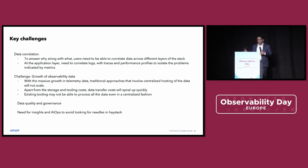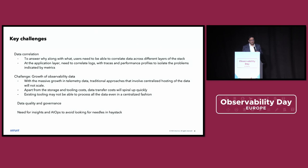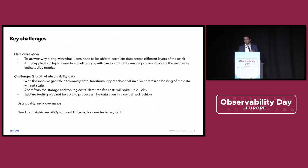Some of the challenges: correlation — I need to make sure data is correlated across different layers of the stack and different types of data, whether it's metrics, traces, or logs. The other challenge is we are looking at significant exponential growth of observability data, and I cannot simply move everything to one central place because it's not efficient — there's latency and huge network and egress costs. We also need data quality, governance, and AI ops accompanying it to turn data noise into insights.